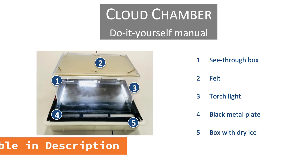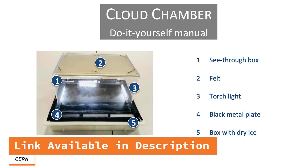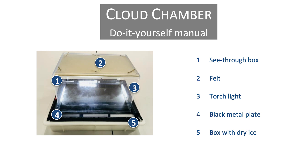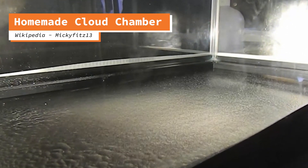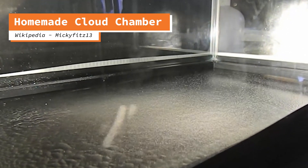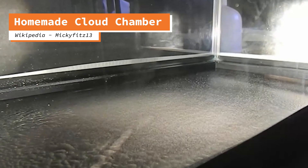Suspended at the top of the chamber is felt, soaked in isopropyl alcohol. The floor of the chamber is a metal plate. The chamber rests on a bed of dry ice, keeping the metal plate extremely cold. When radiation particles from the surrounding Earth or cosmic rays zip through the chamber, they leave a visible trail in their wake. It's really quite remarkable.